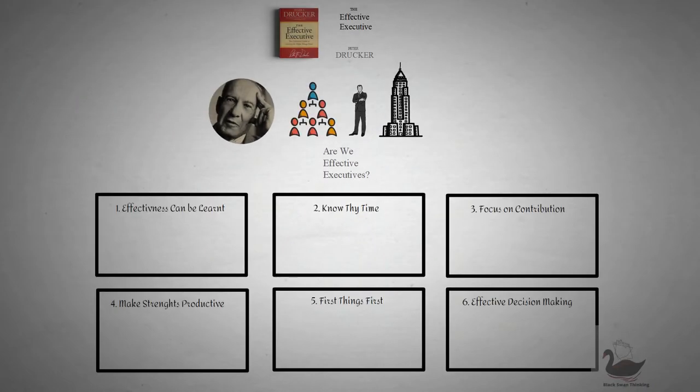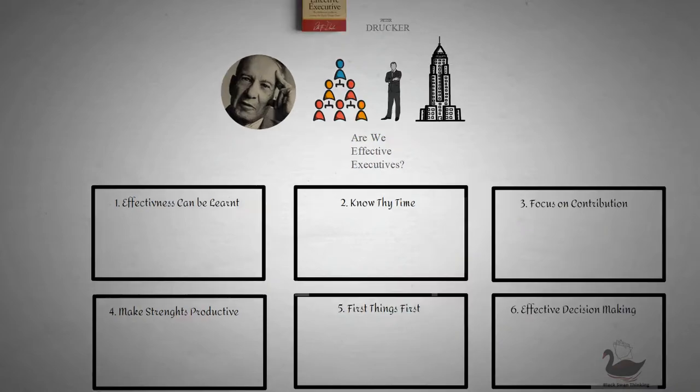Inside the book, Drucker describes a series of principles and traits that most effective executives adhere to when making decisions and going about their daily work lives. Here we have broken down Drucker's book into six sections of key insights. Let's dive into them and discover what makes an effective executive.